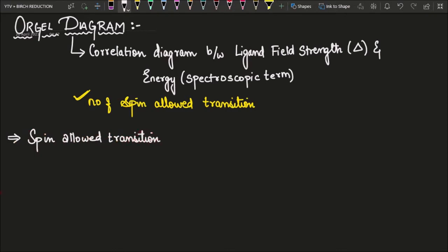What do we mean by spin-allowed transitions? It means delta S should be equal to 0 — that is called a spin-allowed transition. For example, if you have a D5 species, D5 is a spin-forbidden transition, so for a D5 species we cannot use the Orgel diagram.